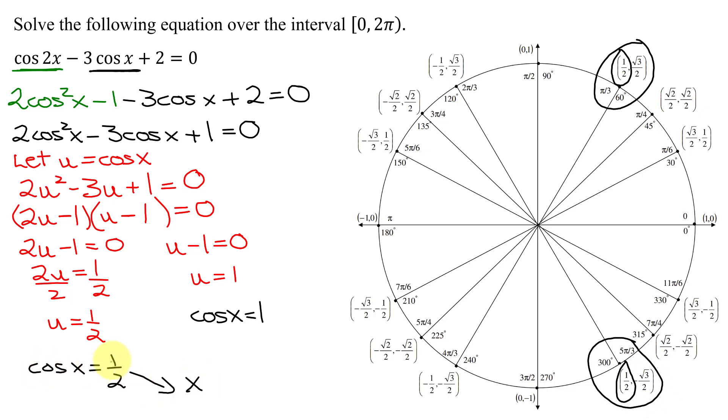So the solutions from when cosine x is 1 half are when x equals π over 3 and 5π over 3. And now when the cosine of x equals positive 1, that only occurs in one place on the unit circle right here. And that is when x equals 0. So the three solutions to this equation are when x is 0, π over 3, and 5π over 3.